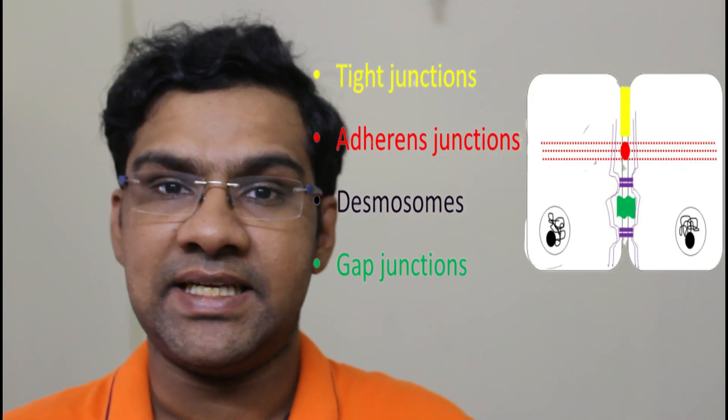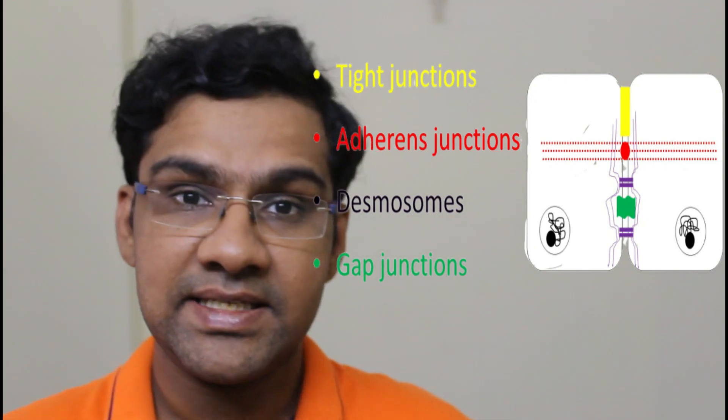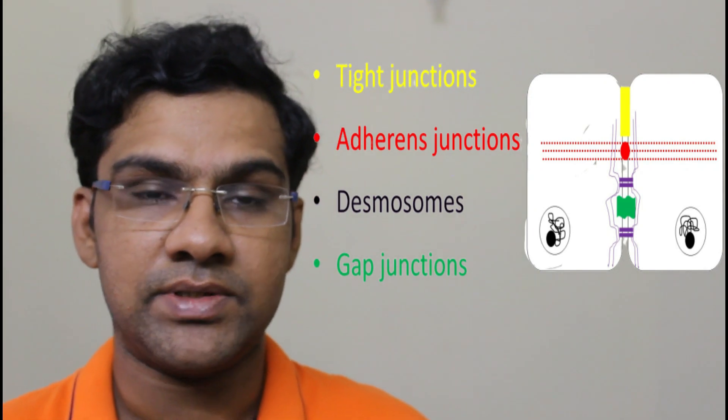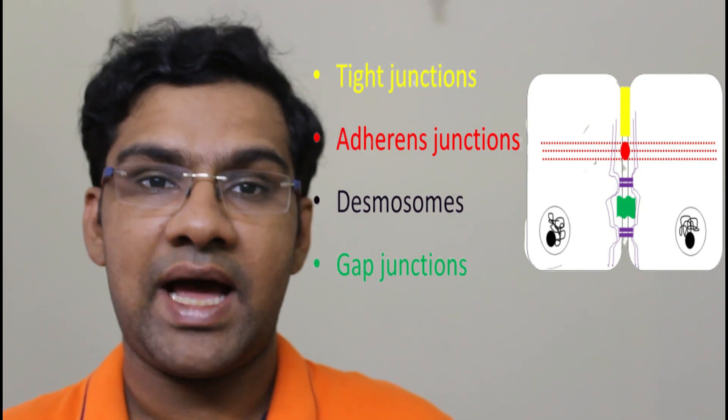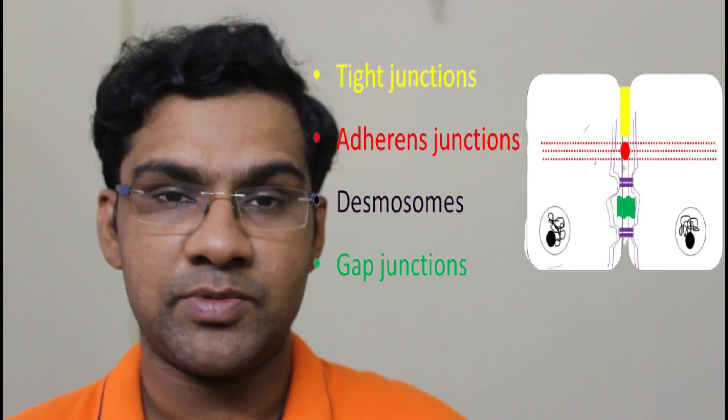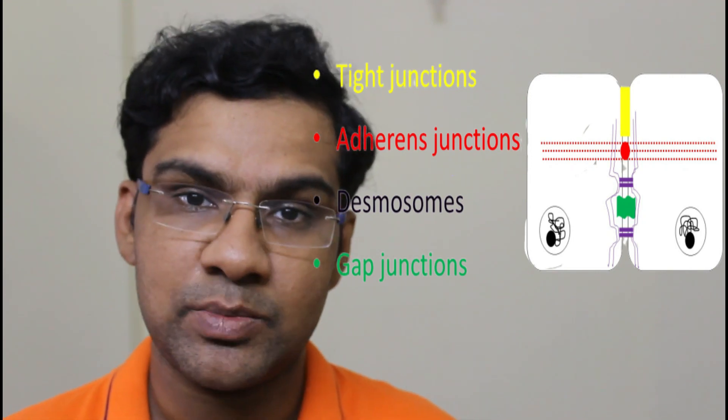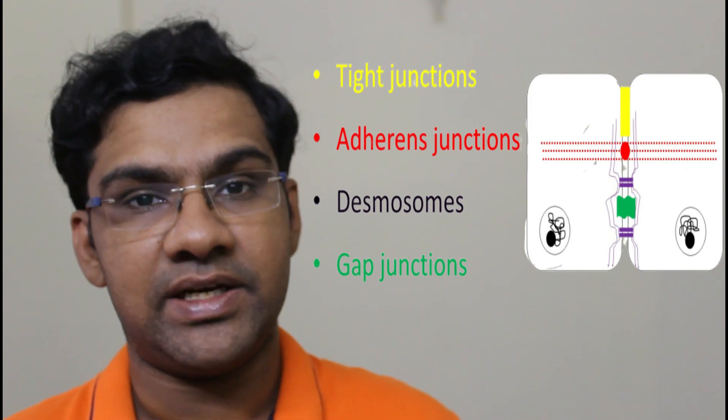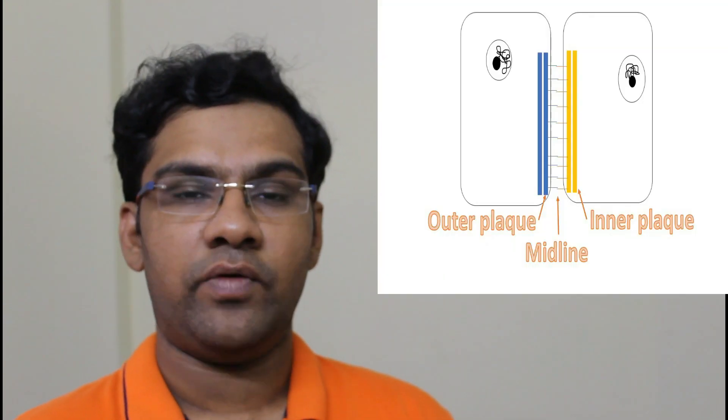Desmosomes are almost present in all types of tissues. The reason why desmosomes are important is because defects or damage to the desmosomes or their structures have led to pathologies related to the skin. We need to understand the structure of the desmosome clearly to know about these diseases. Before going into the ultrastructure, it is important to know how it looks under an electron microscope. A desmosome consists of two plaques.